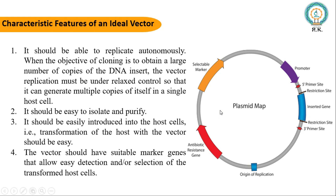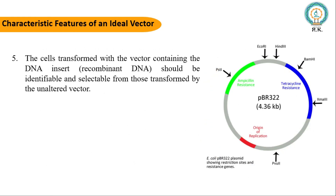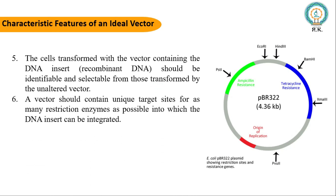Fourth, it should have a selectable marker with an antibiotic resistance gene that facilitates screening of the recombinant organisms. Fifth, the cells transformed with the vector containing the DNA insert (recombinant DNA) should be identifiable and selectable from those transformed by an unaltered vector. Sixth, it should have a restriction site for the insertion of the target DNA.